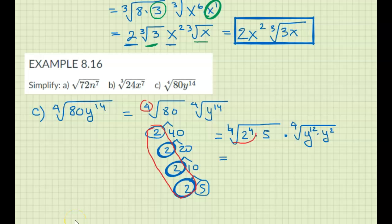So these I can do the division, like 4 divided by 4. So I get 2 to the 1, but the 5 will stay inside the fourth root.